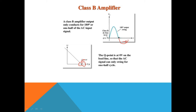For the positive half cycle we get a positive output waveform, but for the negative half cycle we get no waveform. So the main drawback of class B power amplifier is that distortion is present. But since the transistor operates only for 180 degrees, power losses are less, and therefore the efficiency of class B is higher than class A.